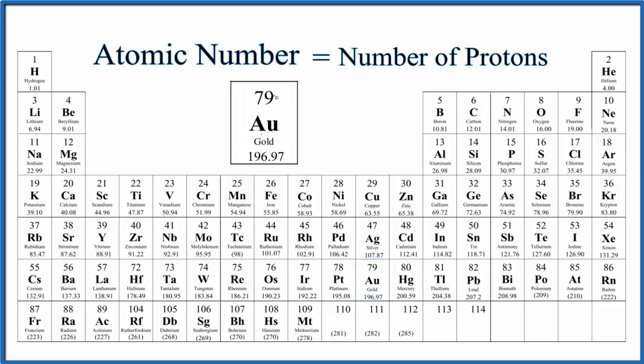If we look at this, the atomic number, that's going to be the whole number, and it's almost always above the element symbol Au. So gold, the atomic number, is 79.